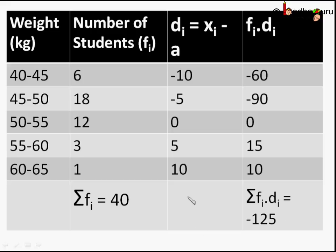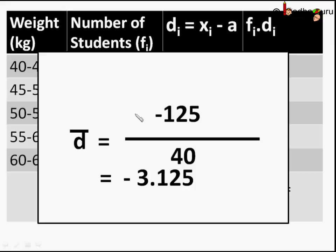Sum of all fi di will be minus 60 plus minus 90 plus 0 plus 15 plus 10, which is equal to minus 125. And sum of all the frequencies will be 6 plus 18 plus 12 plus 3 plus 1, which is equal to 40. So d̄ is sum of fi di divided by sum of fi, which is equal to minus 125 divided by 40, which is equal to minus 3.125. This is mean of deviations.